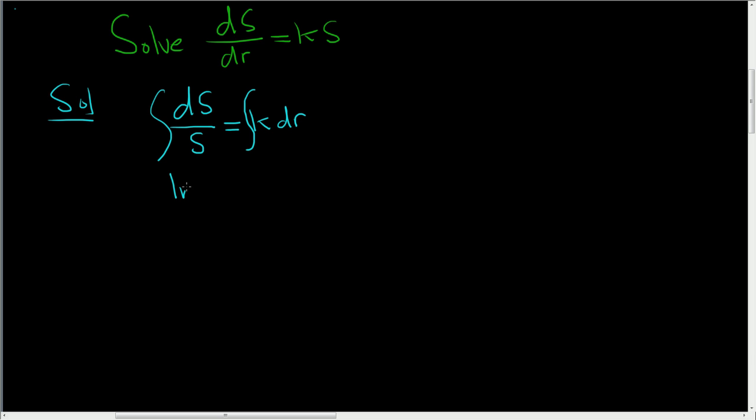So here we're going to end up with the natural log of the absolute value of s equals kr plus a constant. I'm going to call this constant c1 because it will change later at some point.